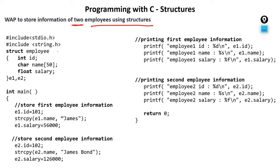We have included two header files: one is string.h and one is stdio.h. We have created a struct employee having three members: one is id, one is name (which is a character array of size 50), and one is salary (which is of float type). We have then created two variables e1 and e2.